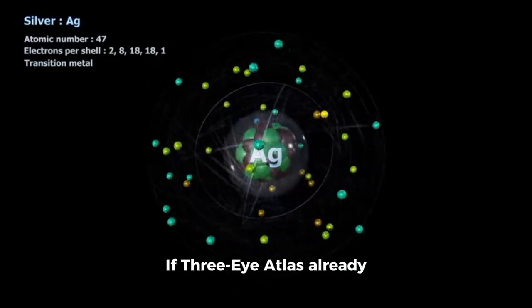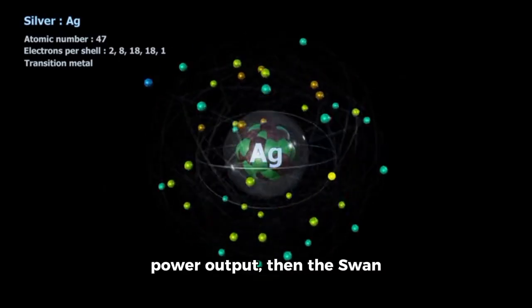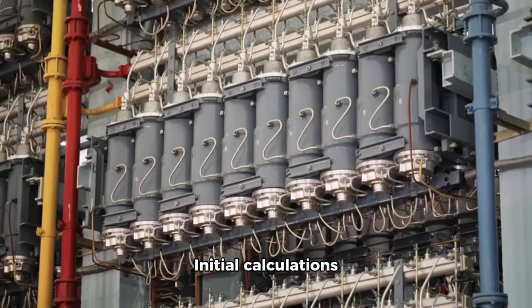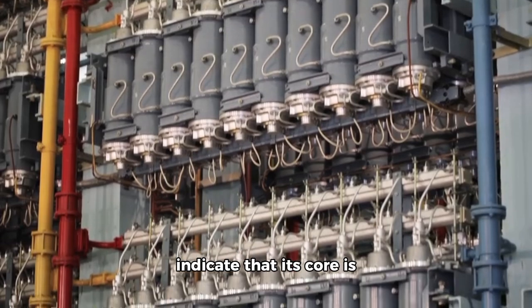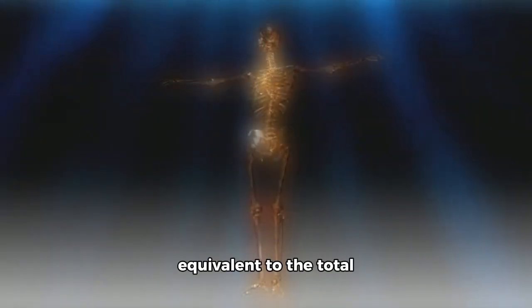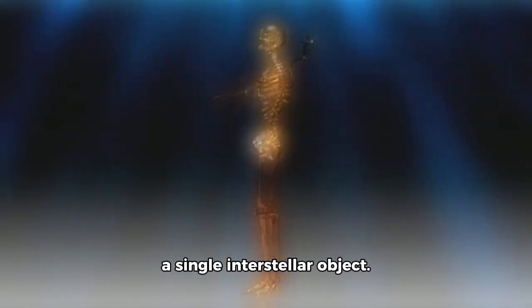If 3i Atlas already alarmed scientists with its unusual nickel composition and its apparent 10 gigawatt power output, then the SWAN has multiplied those fears a thousandfold. Initial calculations indicate that its core is producing more than 10,000 gigawatts every second, an astonishing figure, equivalent to the total consumption of human civilization, compressed into a single interstellar object.